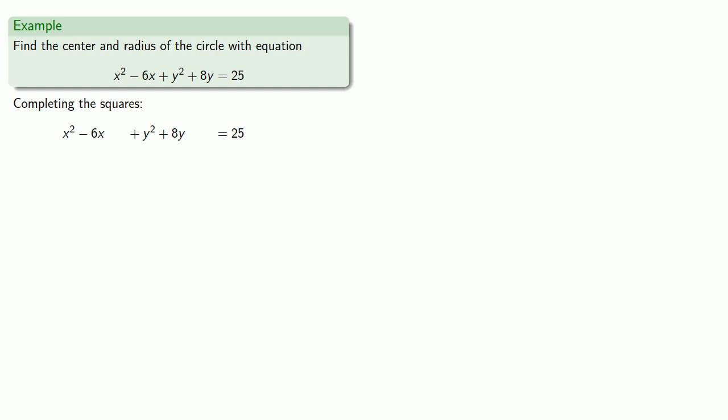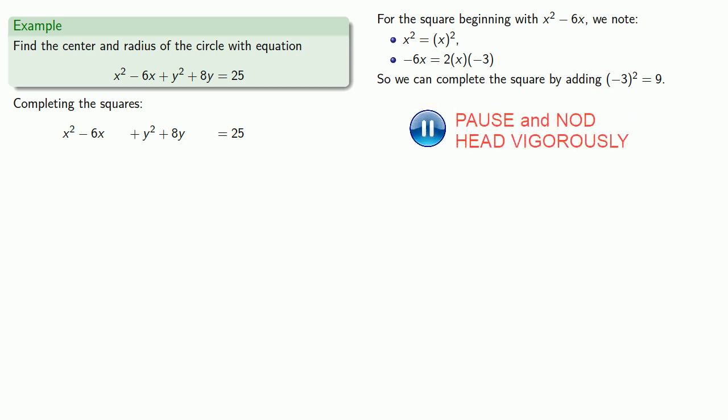Now we want x² - 6x to be the start of a perfect square. So for the square beginning with x² - 6x, we note that x² - 6x is 2 times x times -3. And so we can complete the square by adding (-3)², or 9. And because I have an equation, if I add 9 to one side, I have to add 9 to the other side.